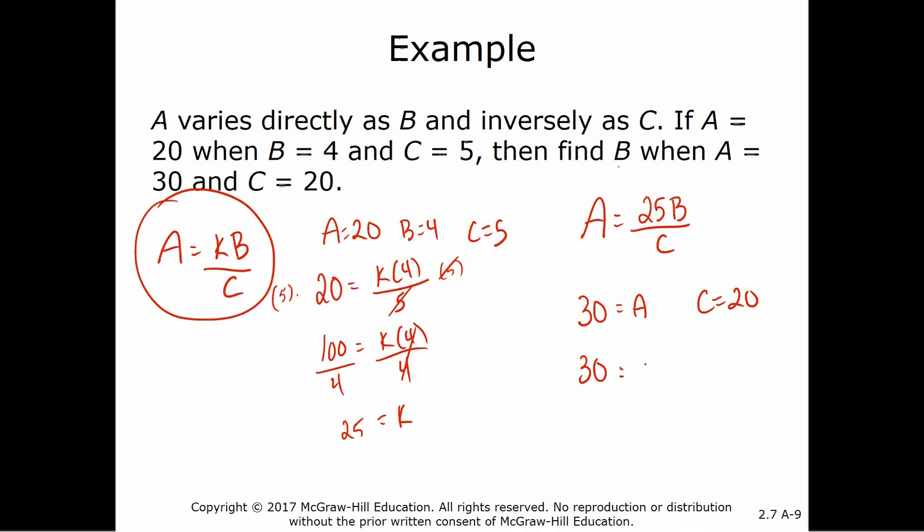So b is the one we're not going to know when a equals 30 and c equals 20. So just plug those in. 30 equals 25b divided by c, which is 20. So we multiply both sides by 20. We get 600 equals 25b divided by 25. How many times will 25 go into 600? That would be like asking how many quarters are in $6. That would be 24, right?